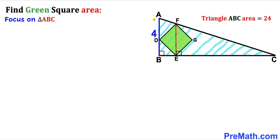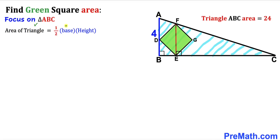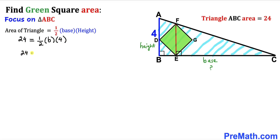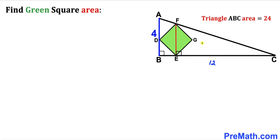Let's focus on right triangle ABC, whose side length AB is 4 units and area is 24. We need to calculate base BC. Recalling the area formula: area = one-half times base times height. With area = 24 and height = 4, we get 24 = one-half times b times 4, which simplifies to 24 = 2b. Dividing both sides by 2, base b = 12, so BC = 12 units.